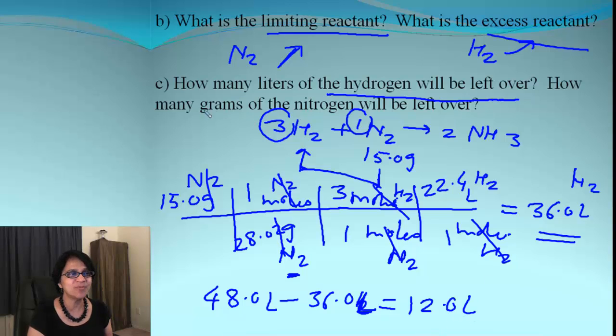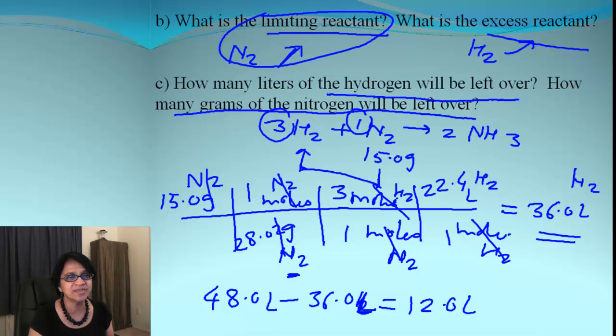The last part is how many grams of nitrogen will be left over. What did we say? Nitrogen was a limiting reactant. And if it's a limiting reactant, how much is remaining? Nothing. Because everything gets used up. So how much of nitrogen will be left over? It will be none. Zero.